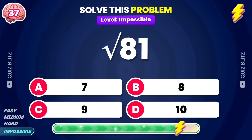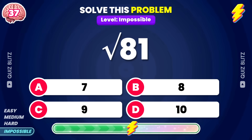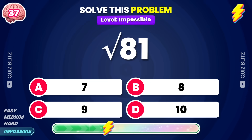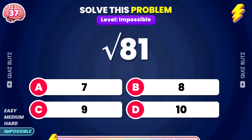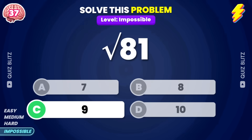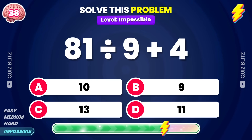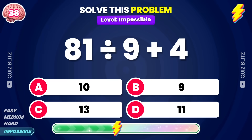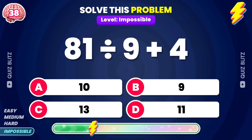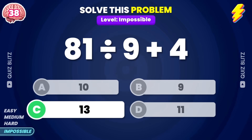What is the square root of 81? The answer is 9. 81 divided by 9 plus 4. The result is 13.